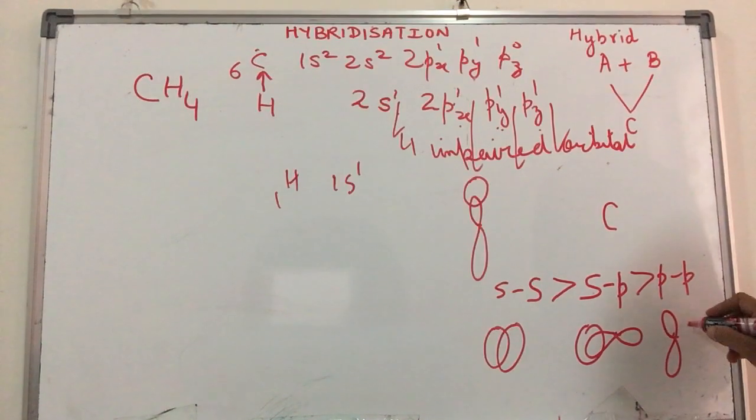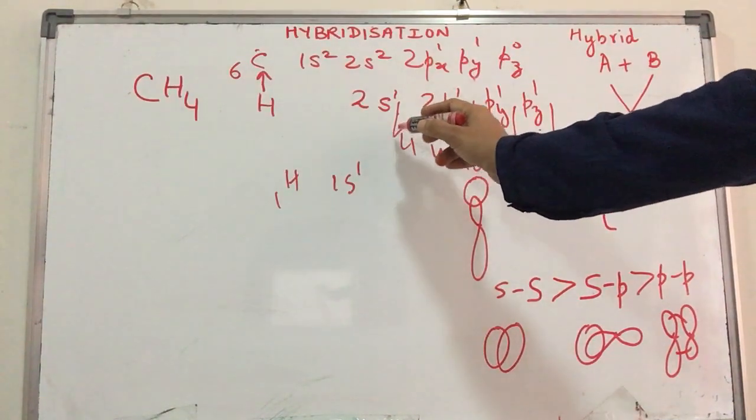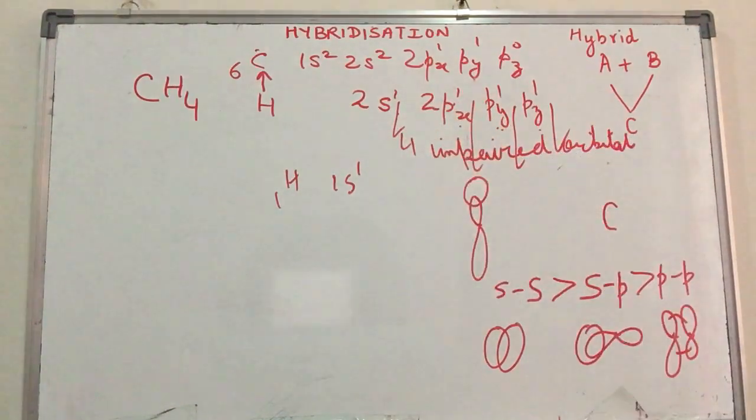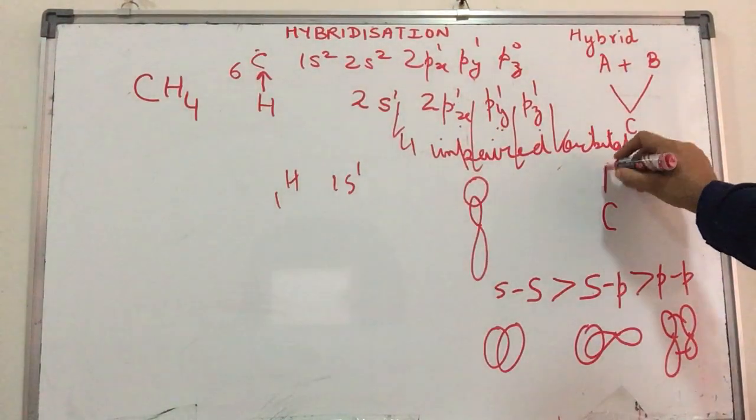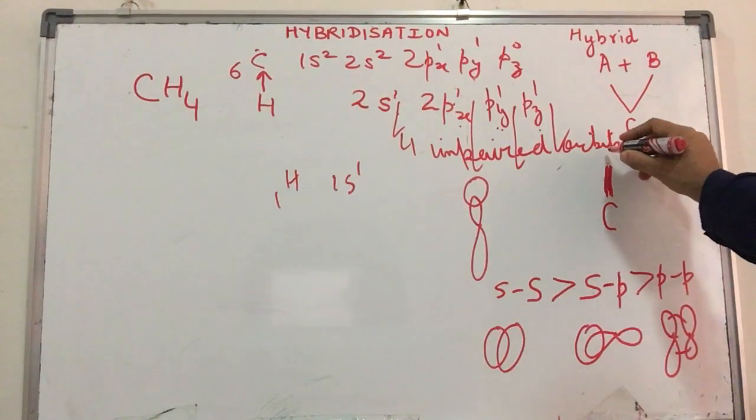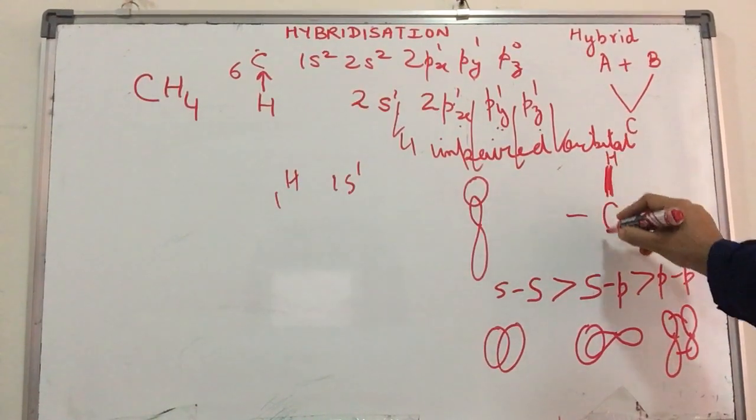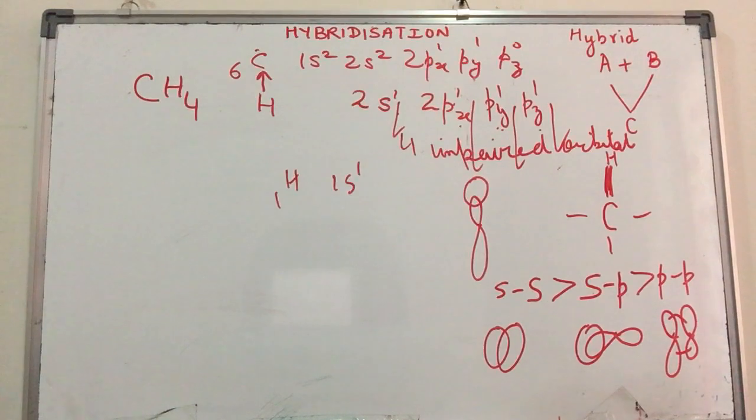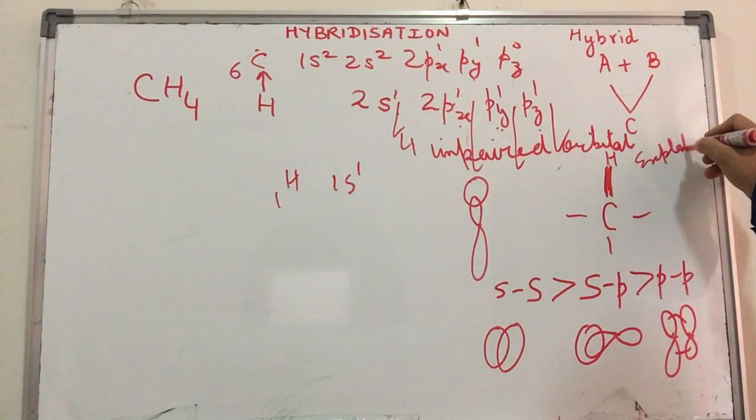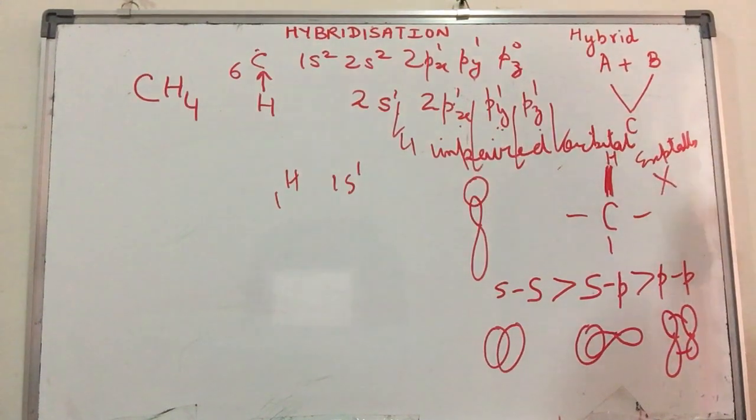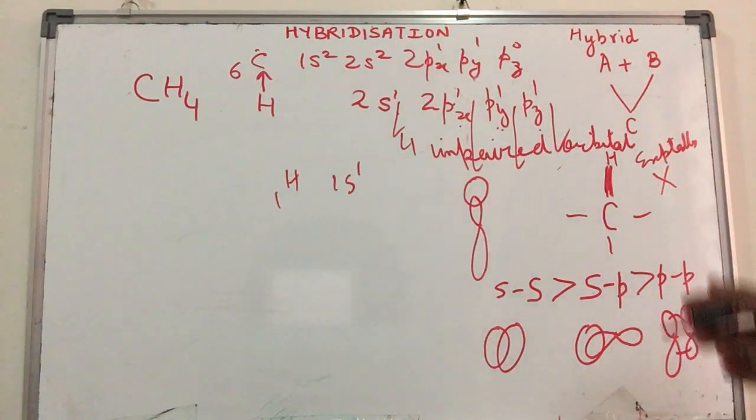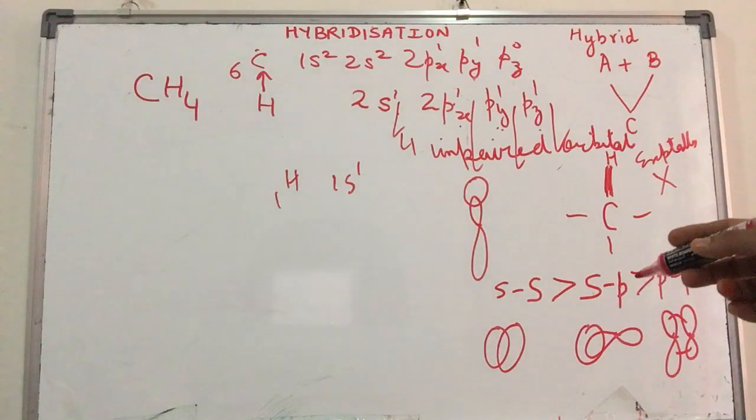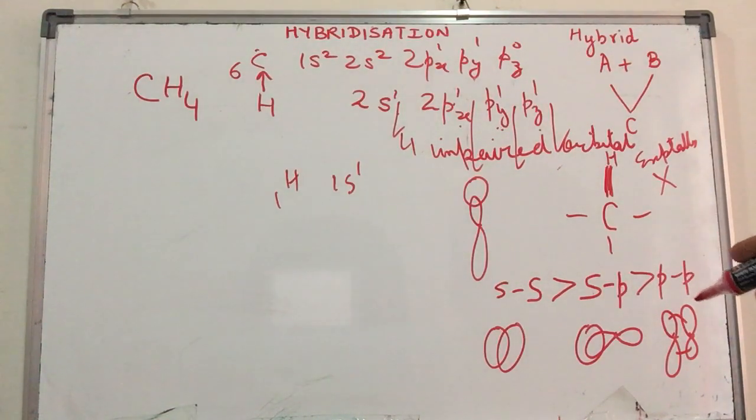In this case, since I'm talking about one SS overlap in methane, one bond should be stronger than the other three. But experimentally, we observe something very different. We notice that all four CH bonds are equally strong.